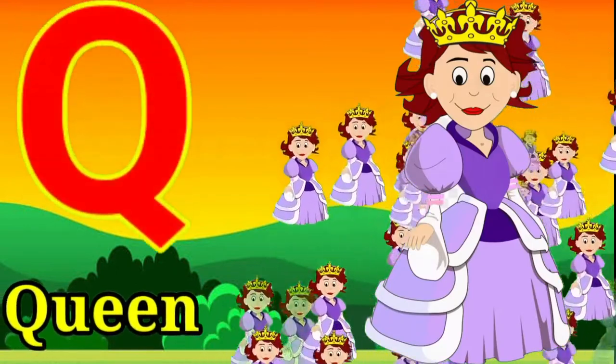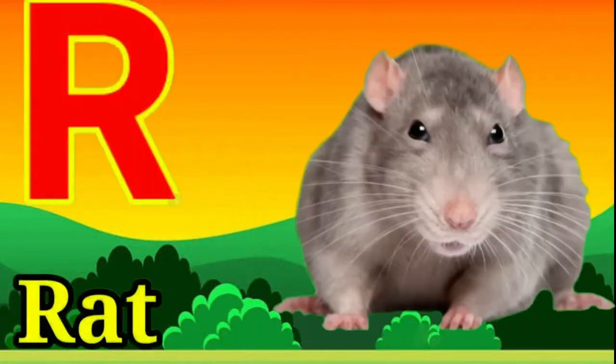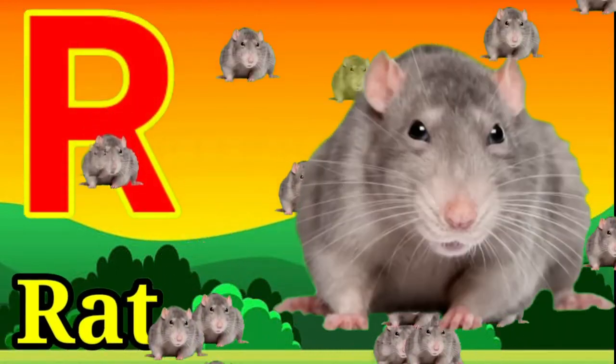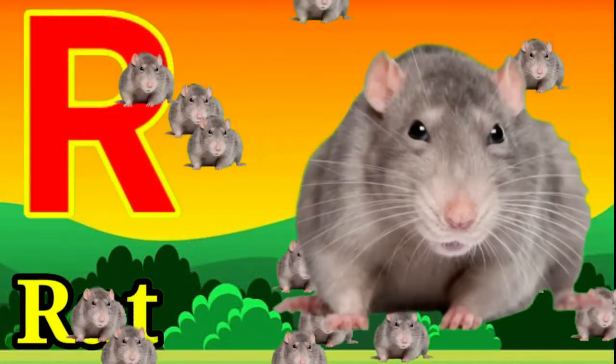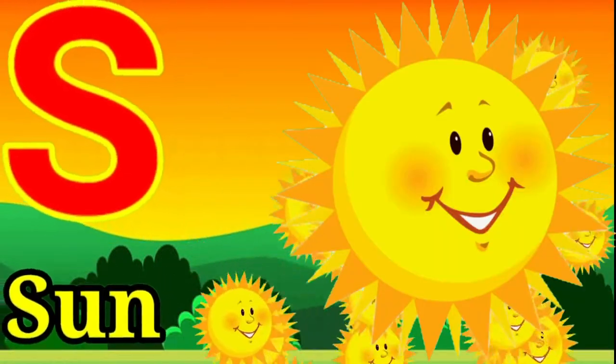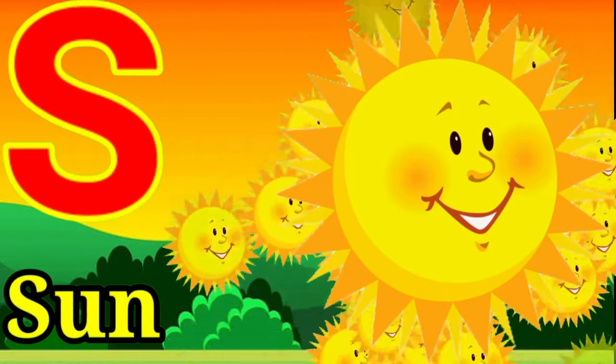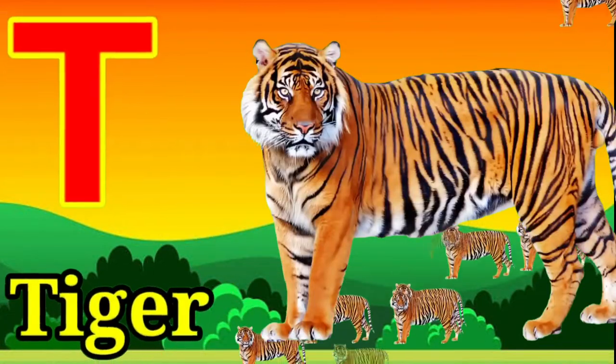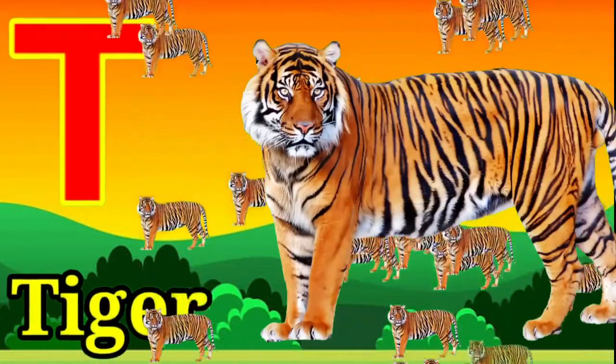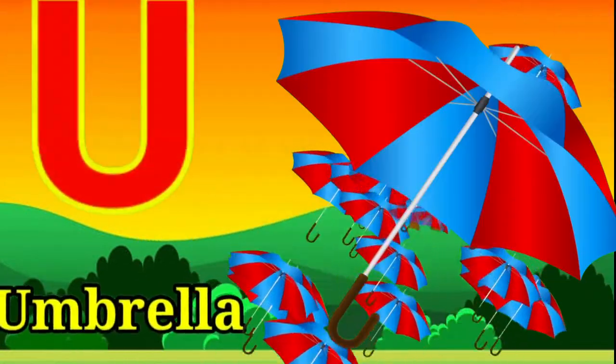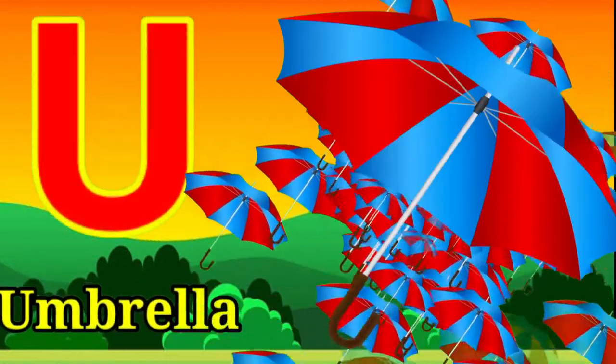Q for queen, R for rat, S for sun, T for tiger, U for umbrella.